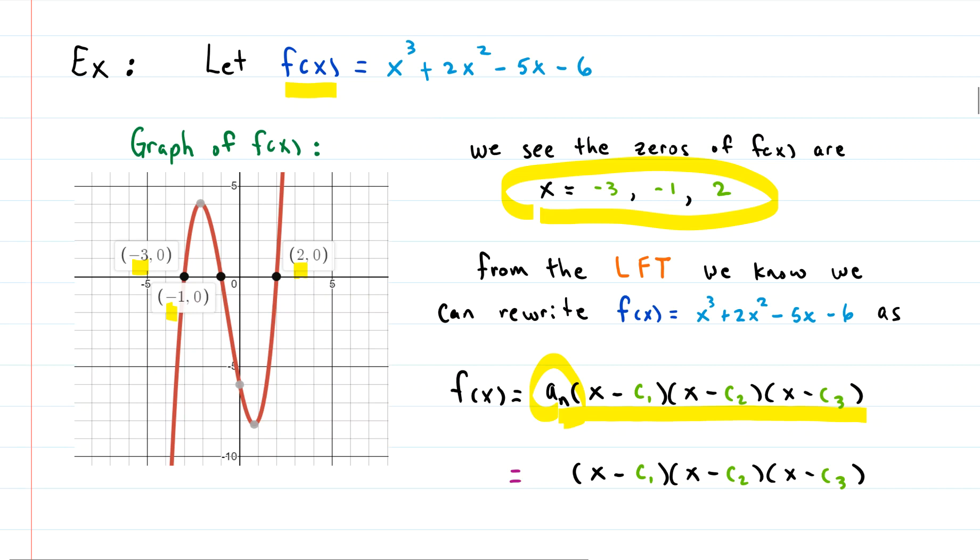leading coefficient? The leading coefficient is 1 because there isn't anything in front of the x³ term. So let's write down 1, and really we don't need to even have it because 1 times anything is just itself, so we will actually leave that off, but we know that it's there. So what is the first root? Negative